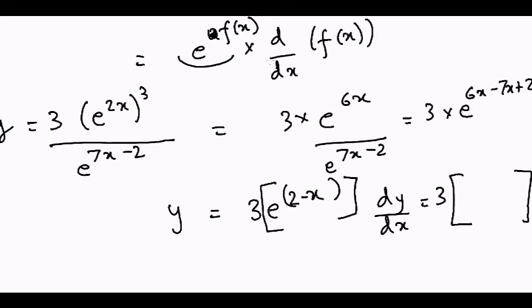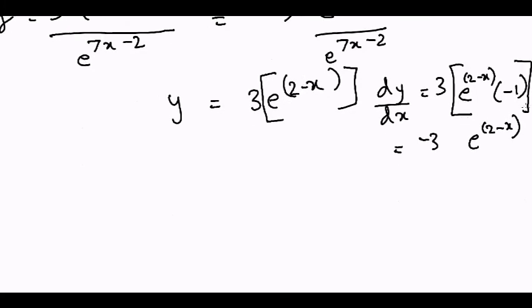So 3 times the function unchanged, e to the power (2 minus x), times the derivative of f(x). The derivative is just minus 1 in this case. So my final answer is minus 3 times e to the power (2 minus x).